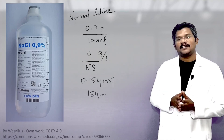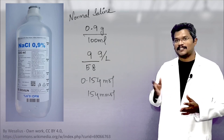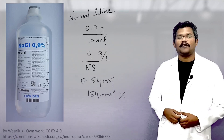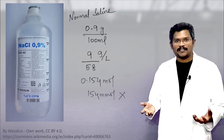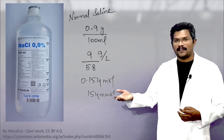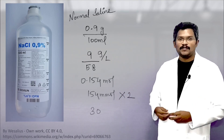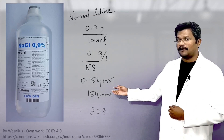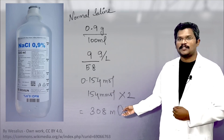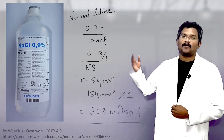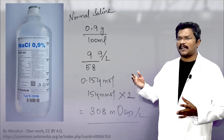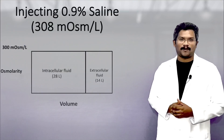Since we are discussing osmolarity, let us convert this into milliosmoles. We multiply by the number of particles sodium chloride produces in solution, which is 2. So 154 times 2 gives us 308 milliosmoles — that is the osmolarity of a 0.9% saline solution. Let us see what happens if we add this into the extracellular fluid compartment.